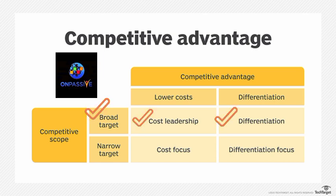If you see in tabular form, competitive advantage has two scopes: broad target and narrow target. In narrow target, companies are focused on cost focus or differentiation focus in a particular area. OnPassive has a broad target — cost leadership and differentiation. Lower cost and differentiation are the two main factors that make competitive advantage. OnPassive's broader scope includes cost leadership and differentiation, which I will discuss in detail.